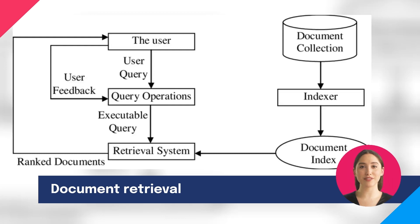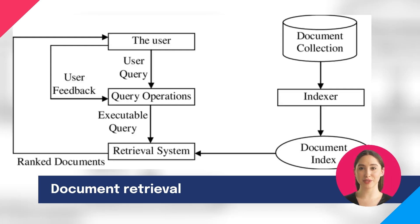The authors of this paper propose a new approach to document retrieval that uses a sequence-to-sequence model to generate relevant document identifiers directly from the query. The model outperforms both inverted index and vector-based retrieval systems.